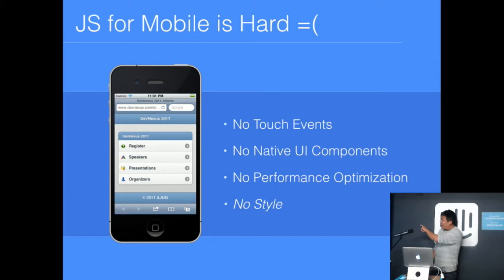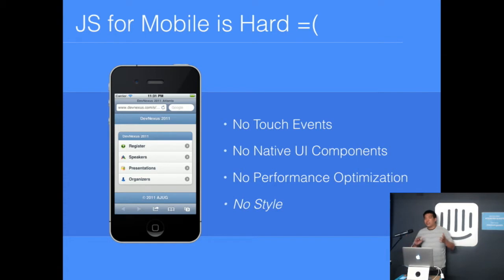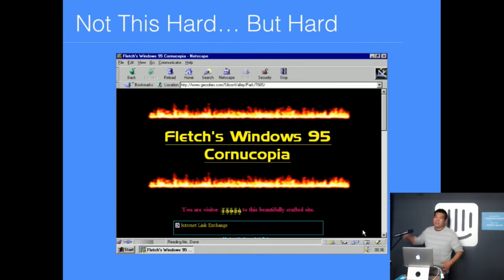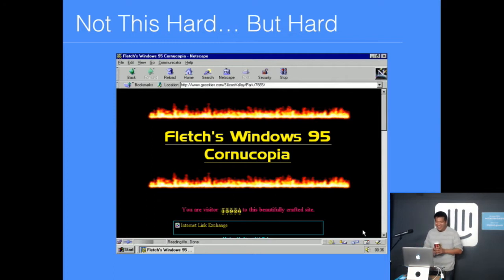Most importantly, there's no style out of the box. All we get is JavaScript, so not only do we lack that baseline mobile look and feel, it's very difficult to even take it beyond that and customize it. JavaScript for mobile is not quite like GeoCities 1997 hard, but it's pretty hard. And in modern hybrid development, this is where frameworks come in.